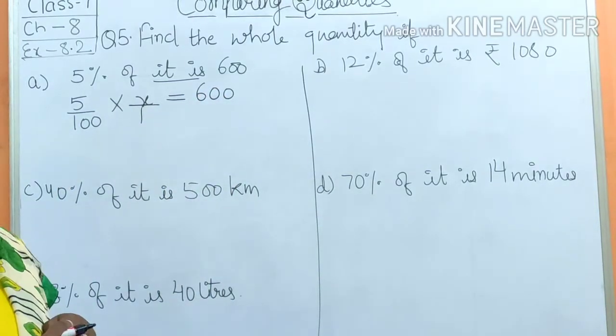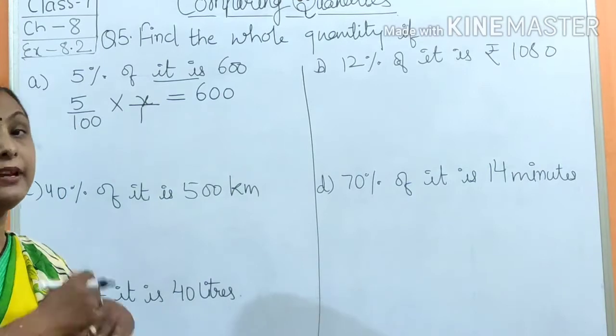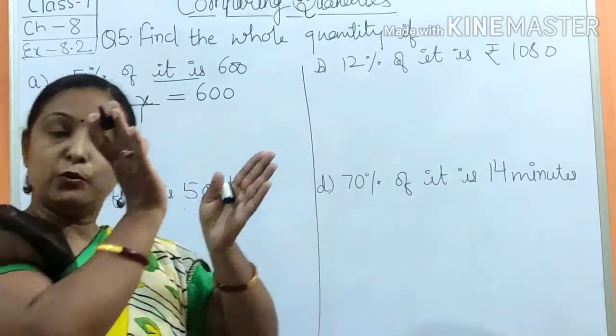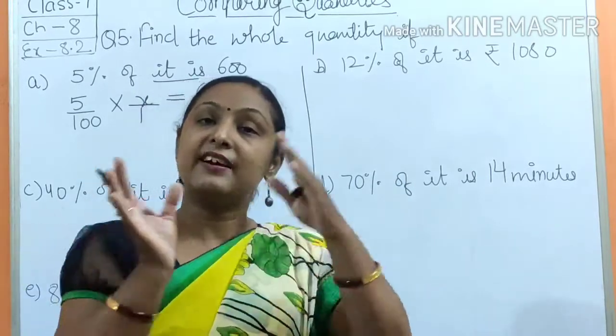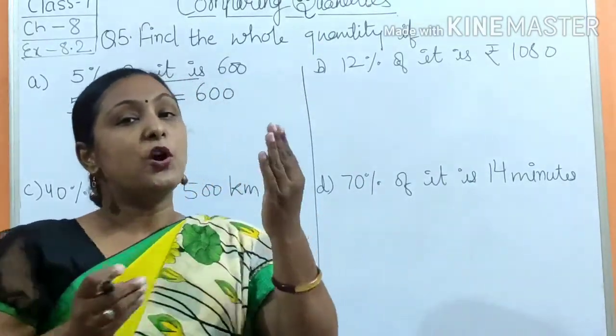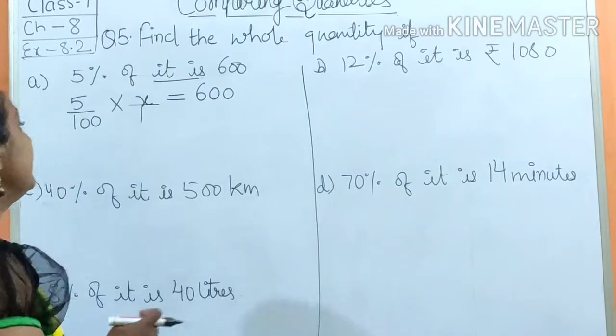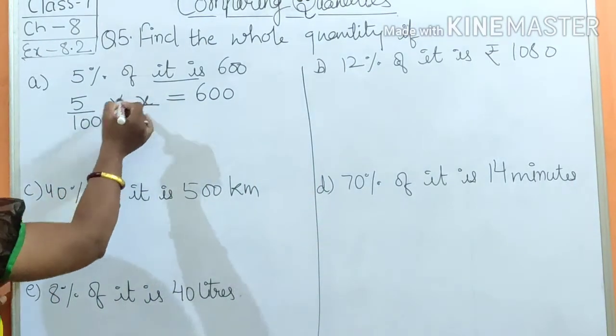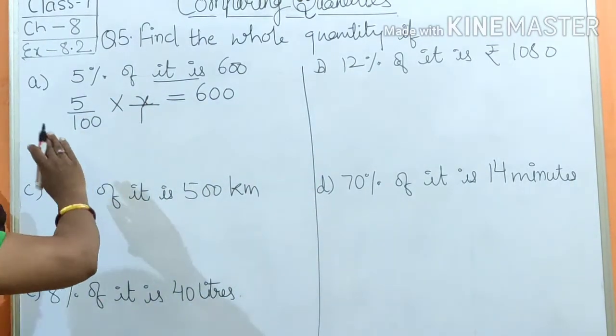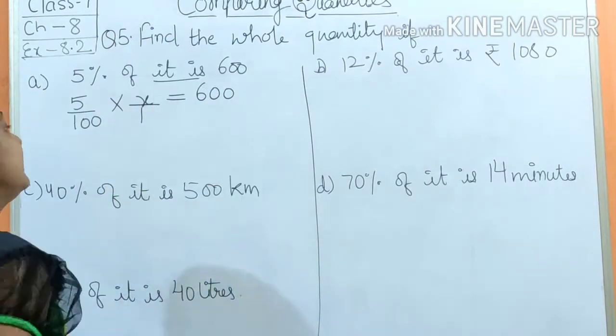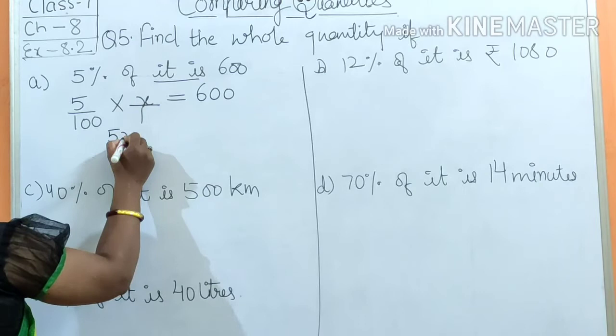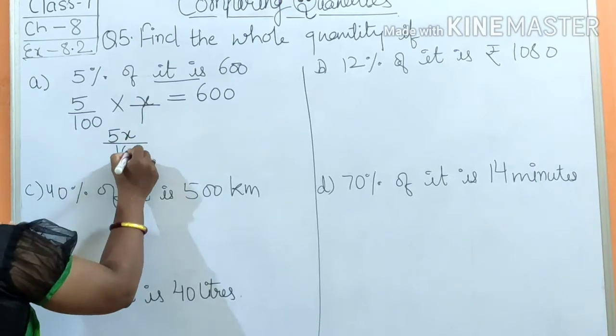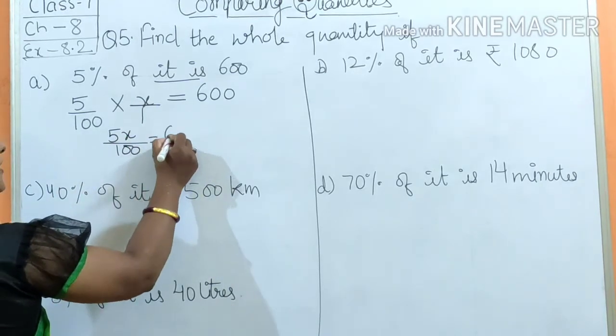Now what to do? Transpose. Transpose means the numbers on the left side of equals to, we bring them to the right side, and right side ones to left side. Whatever is unknown, we keep it there. Okay, so I have only one x unknown. All other terms we will take to the right side. So here first multiply 5 multiply x, this is 5x upon 100 equals to 600.